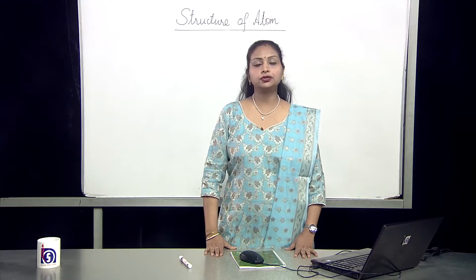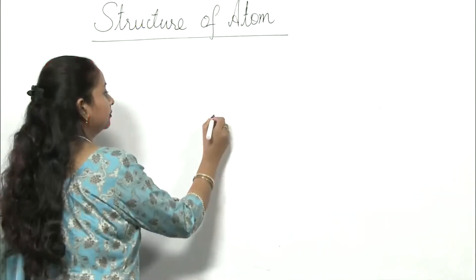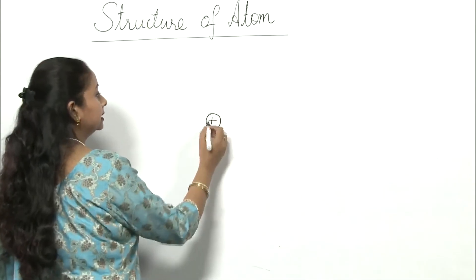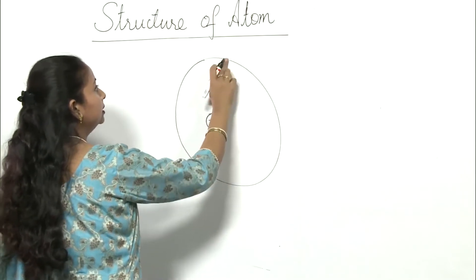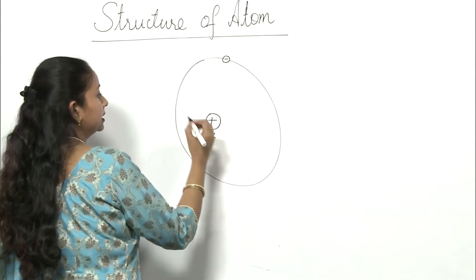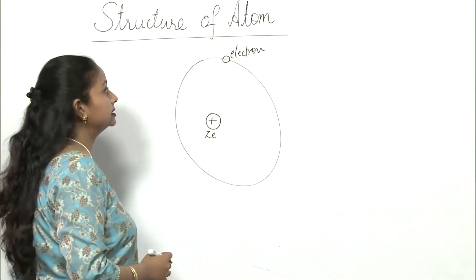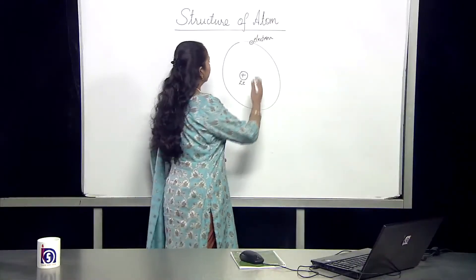The first postulate says that electron in an atom moves in a circular orbit. Now, what do we mean by this? We mean that the electron is revolving round the nucleus which is positively charged, and the electron is revolving in a circular orbit.